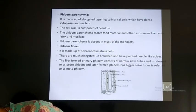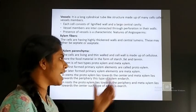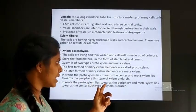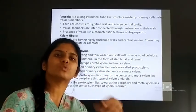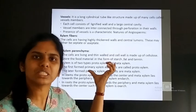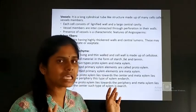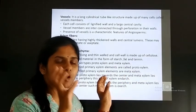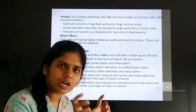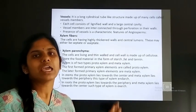Another condition is exarch — it is vice versa to endarch. In exarch, proto xylem lies towards the periphery and meta xylem lies towards the center. Endarch occurs in stem; exarch occurs in root. In root it is opposite: proto towards periphery, meta towards center — that is the exarch condition.